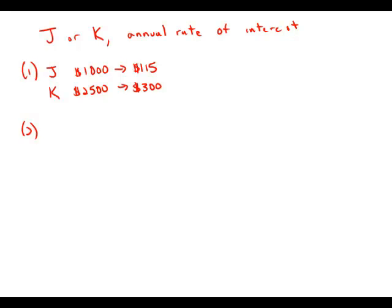So for each one of these we could figure out the annual rate of interest. This is very important though. We're not actually going to do that calculation. That would be a mistake on data sufficiency. We don't have to actually perform the calculation. It's enough to know that we could perform the calculation and therefore these statements are sufficient.